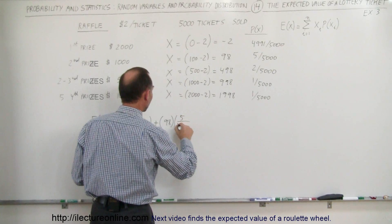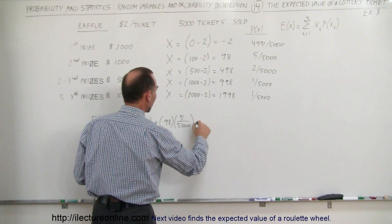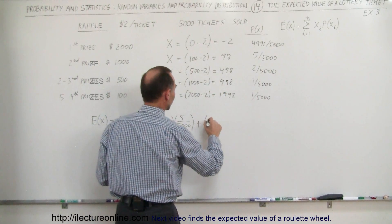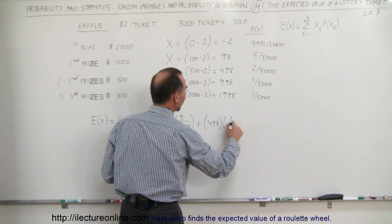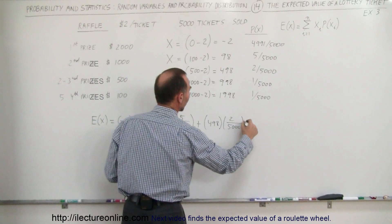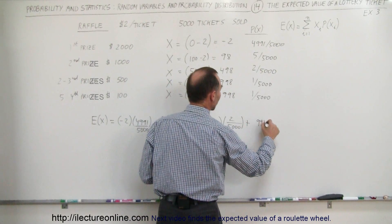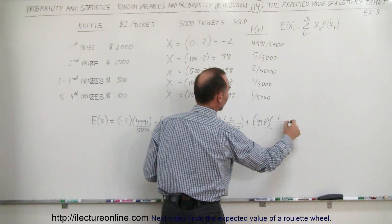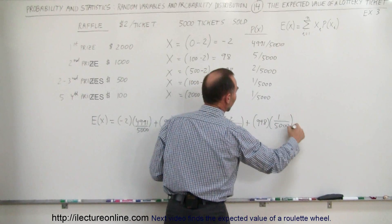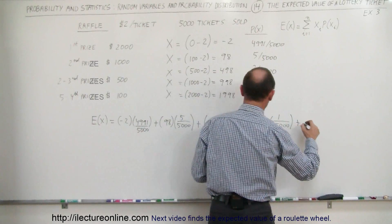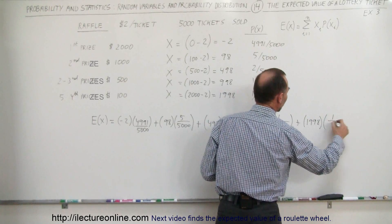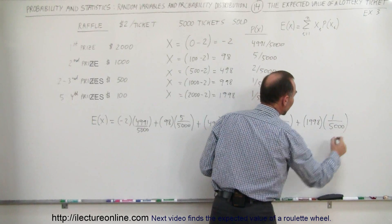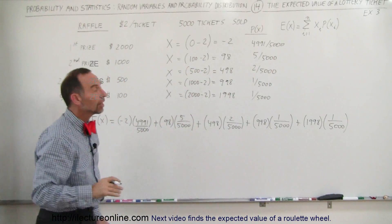So here would be 5 divided by 5,000 plus the value of that kind of ticket, which is 498, multiply times 2 divided by 5,000 plus the value of this kind of ticket, which is 998, multiply times 1 over 5,000, and then finally, the value of the most winning ticket of 1,998, and the probability is 1 over 5,000.